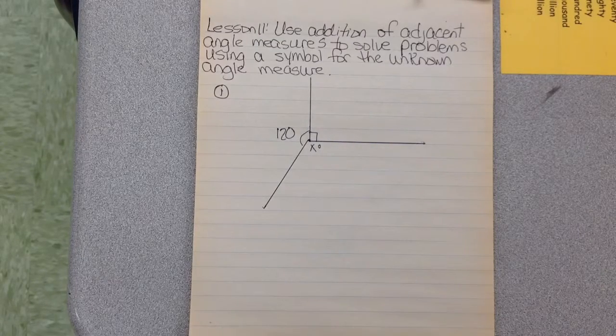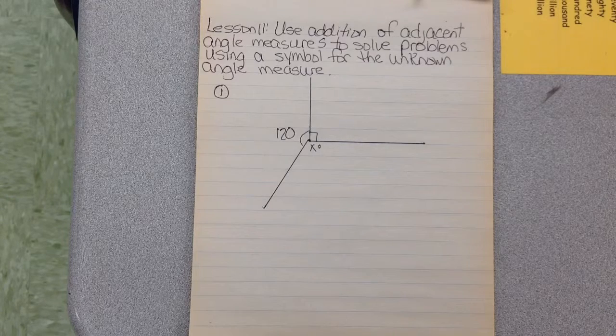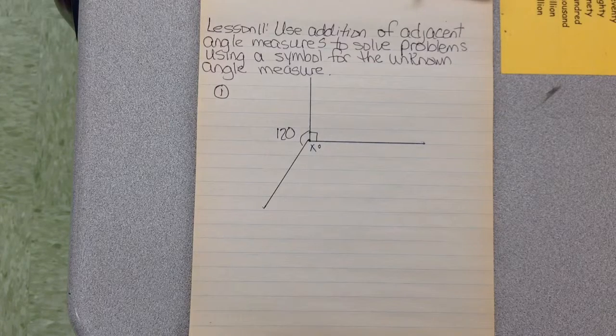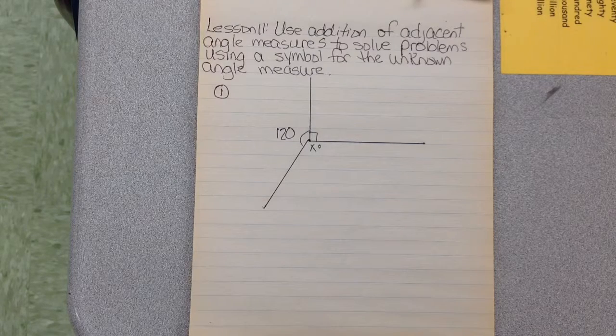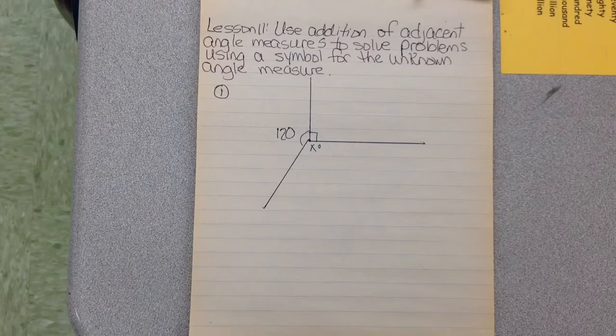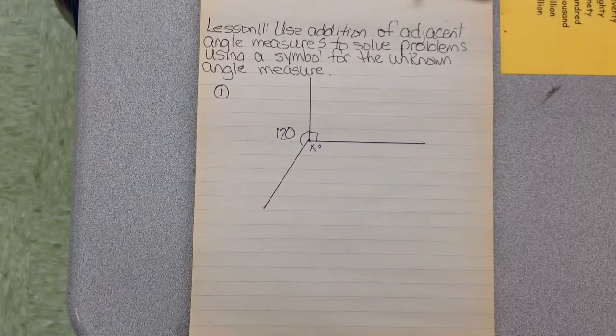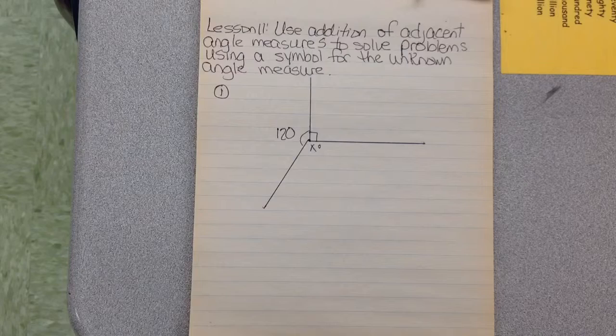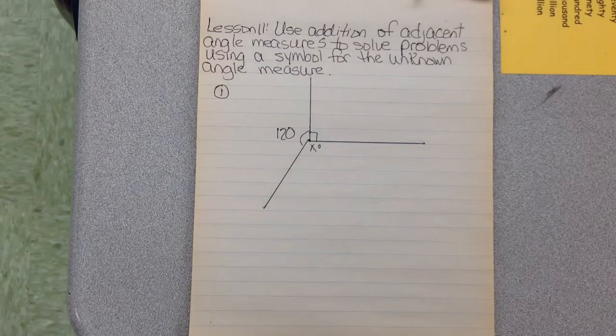Module 4 Lesson 11: Use addition of adjacent angle measures to solve problems using a symbol for the unknown measure. This is very similar to what we did yesterday. We were working with the benchmark angles of 90 degrees and 180 degrees. Today we're going to be using 360, so that should tell you that all the angles together come to a point and make a circle. Let's look at our first example.